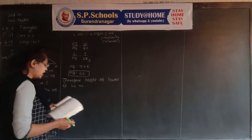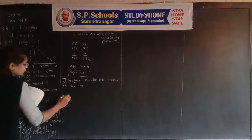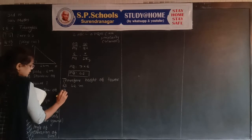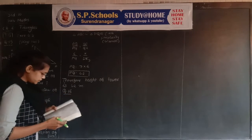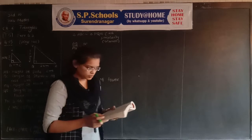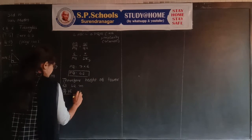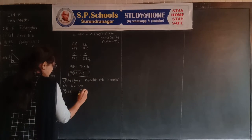PQ is the height of the tower, therefore the height of the tower is 42 meters. Hence question number 15 is completed. Now we discuss the last question, number 16, from exercise 6.3. See the question in the textbook on page number 141.